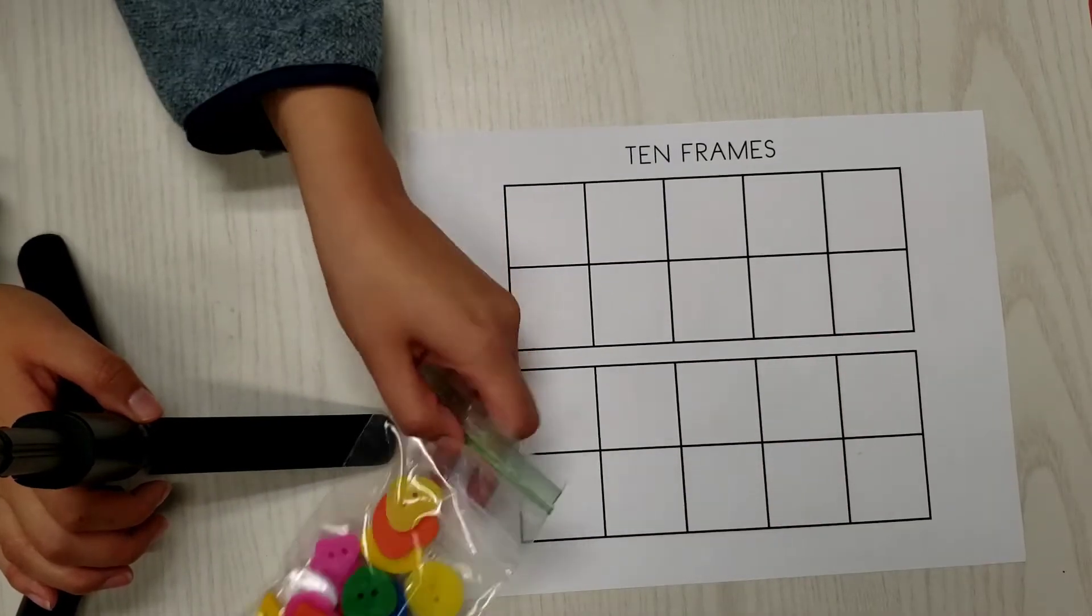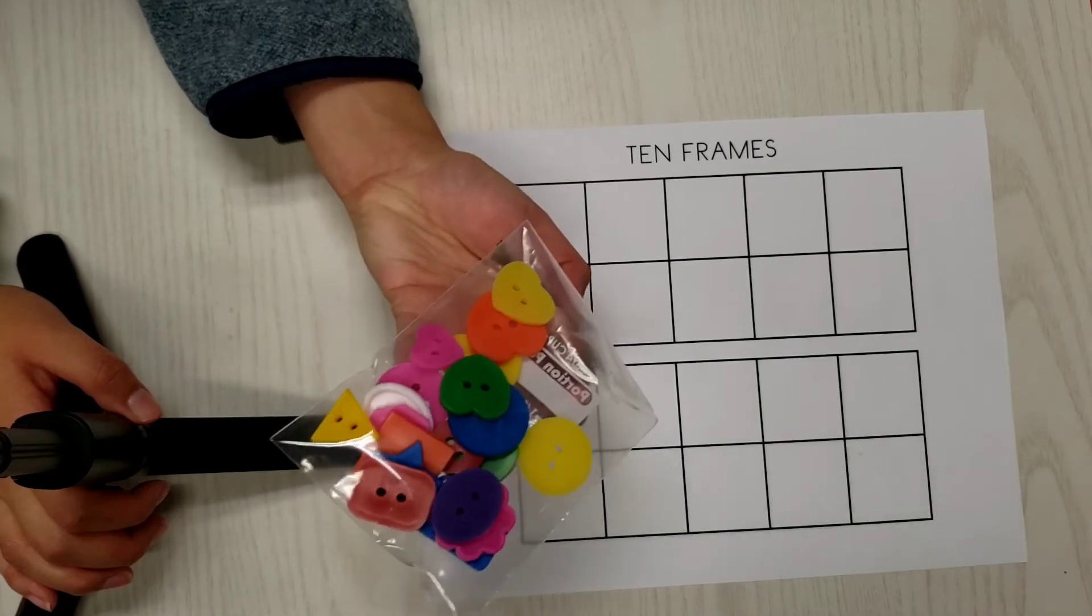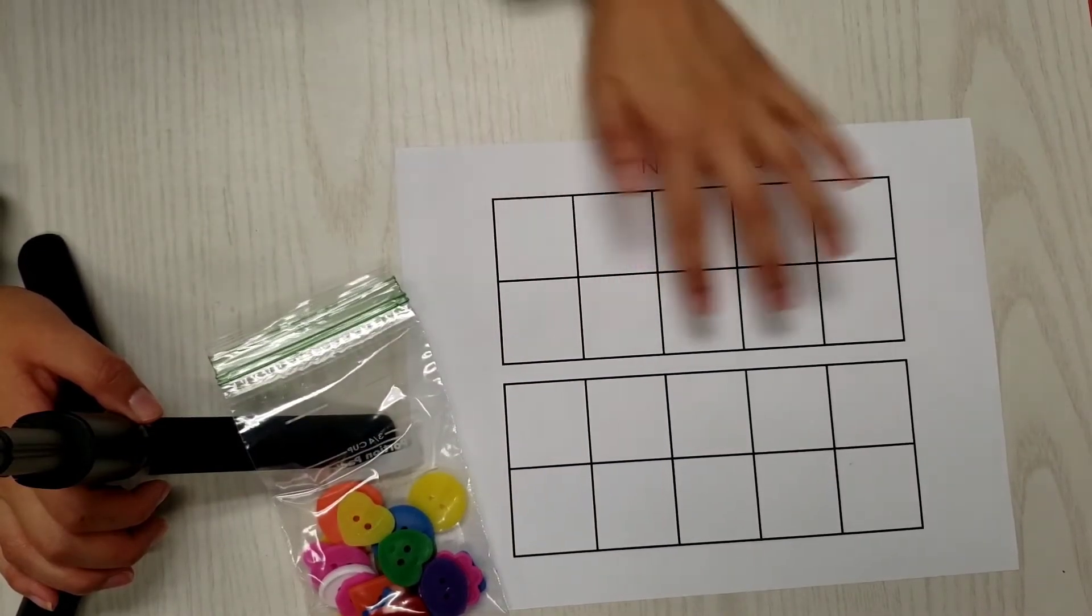Para la actividad de hoy, vamos a usar de nuevo los botones que usamos ayer, y para esta actividad, entonces, van a ver 10 cuadritos.